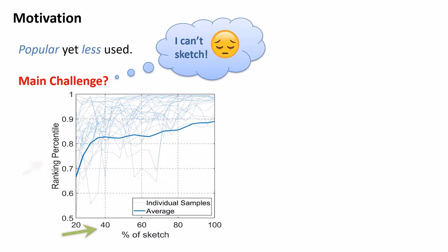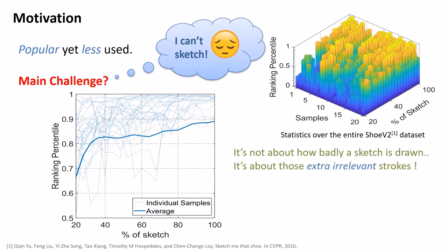As the rasterized sketch image, and plotted retrieval accuracies accordingly using a pre-trained FGSBIR model. We noticed some unexpected dips in the performance in the later part of the drawing episode. This signifies that later irrelevant strokes are the actual culprit behind degrading accuracy.